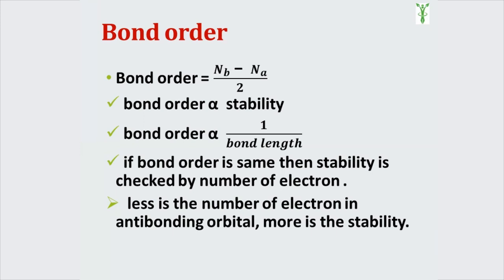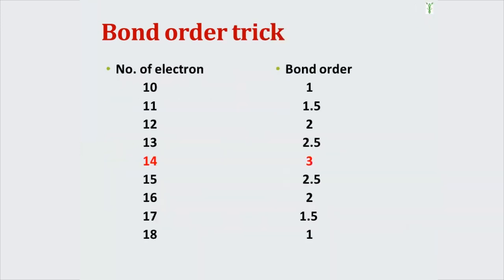Now the question is: what if we get the same bond order? How do we check stability? For checking stability, we have to see the number of electrons in the antibonding molecular orbital. Less is the number of electrons in the antibonding molecular orbital, more is the stability of that molecule. So this is all about bond order.